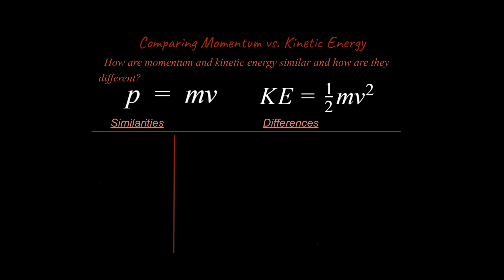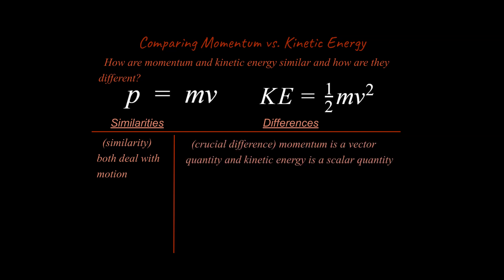Let's talk about similarities and differences between momentum and kinetic energy. Here's the equation for momentum, and here's the equation for kinetic energy. One way they're similar: they both deal with moving objects — that's how people can sometimes confuse them. But they are mostly different. The biggest, most crucial difference is that momentum is a vector quantity and kinetic energy is a scalar quantity. Momentum must have a direction associated with it; kinetic energy inherently has no direction.